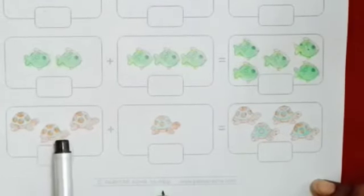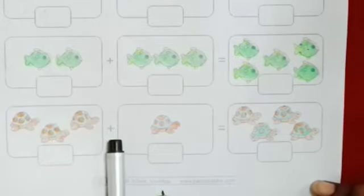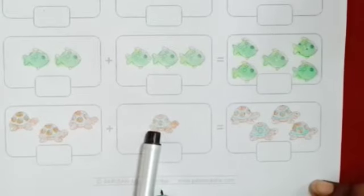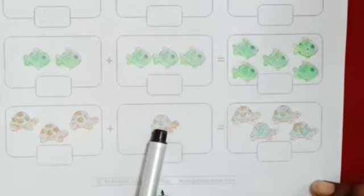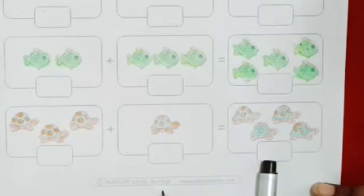Now these are turtles. In this box, how many turtles are there? 1, 2, 3 — 3 plus. How many are here? There is only 1 turtle. 3 plus 1. So all together, how many? We will count — 1, 2, 3, 4. So we will write here number 4.